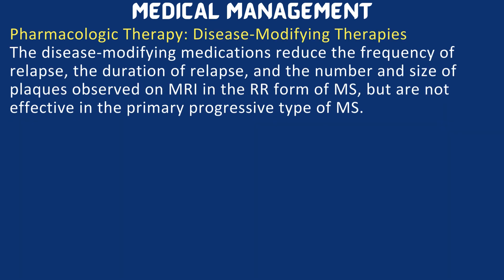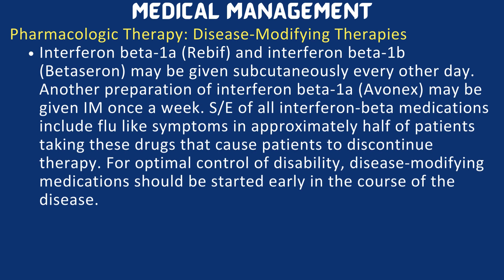Disease modifying medications reduce the frequency and duration of relapse and the number and size of plaques on MRI in the relapsing-remitting form of MS, but are not effective in primary progressive MS. Interferon beta-1a (Rebif) and interferon beta-1b (Betaseron) may be given subcutaneously every other day. Another preparation of interferon beta-1a may be given IM once a week. Side effects of interferon beta medications include flu-like symptoms in approximately half of patients, which may cause them to discontinue therapy. Disease modifying medications should be started early in the course of disease for optimal control of disability.